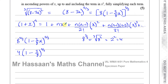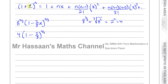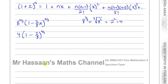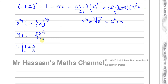Now I have this in the form needed to expand it using the binomial expansion formula. I'll write the 4 separately and apply the formula. Here n is the power, which is two thirds, and the x in the formula represents the whole second term including its sign, which is minus 3 over 8 x. So the nx term becomes two thirds times minus 3 over 8 x.